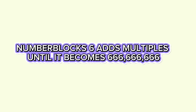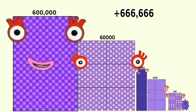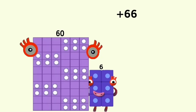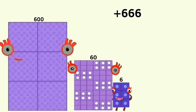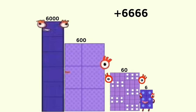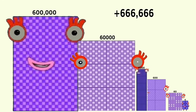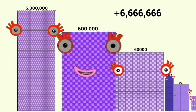Number Blocks 6 adds multiples until it becomes 666,666,666. The sequence builds: 6, 66, 666, 6666, 66,666, 666,666, 6,666,666.